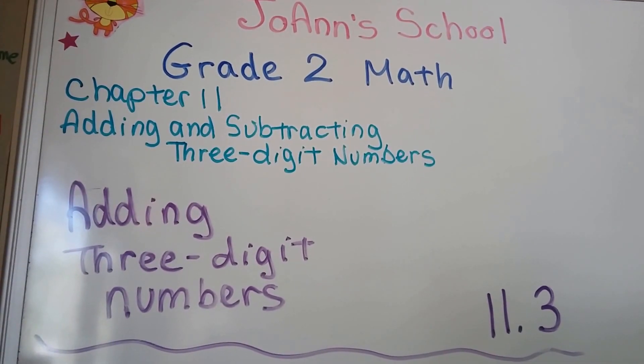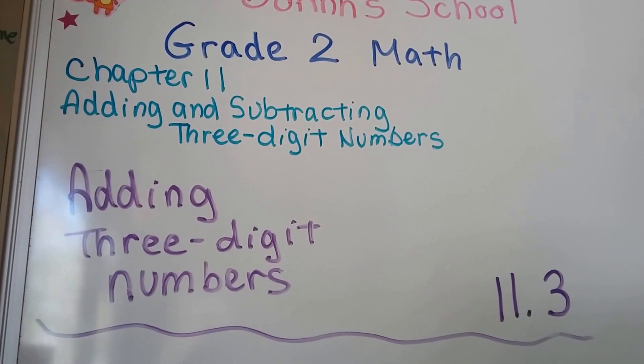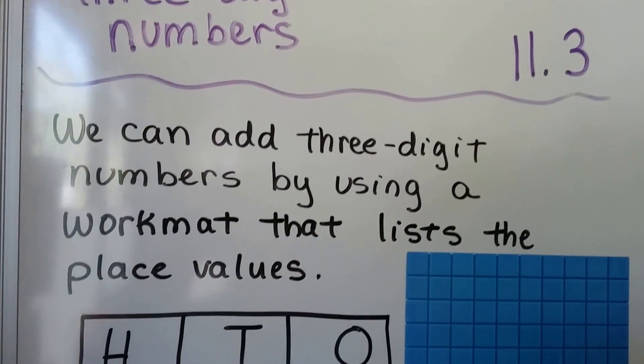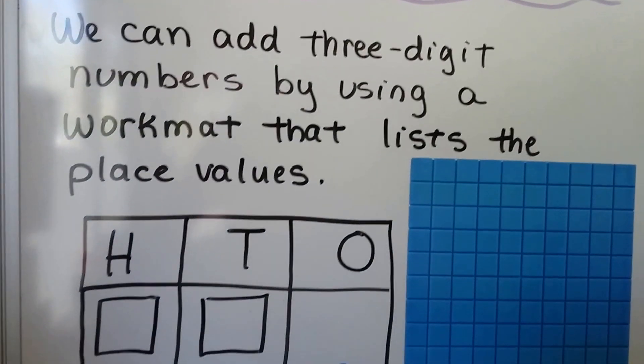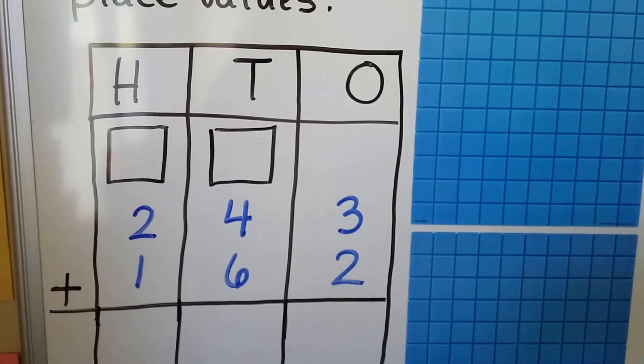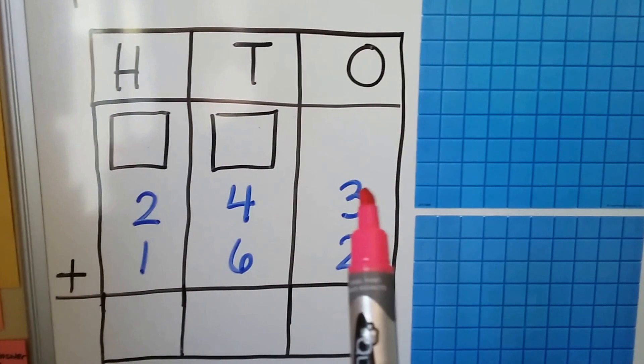We're moving along in chapter 11. We're at 11.3 and we're going to be adding three-digit numbers. We can add three-digit numbers by using a work mat that lists the place values. The H stands for hundreds, the T stands for tens, and the O stands for ones.